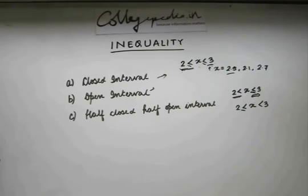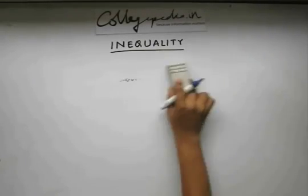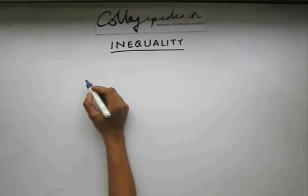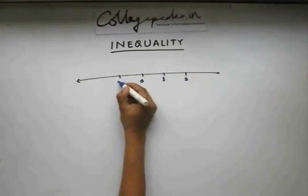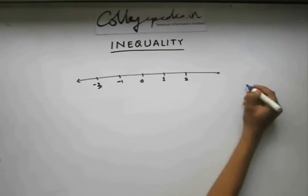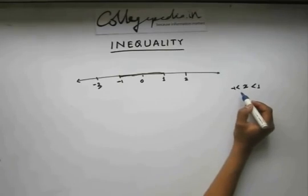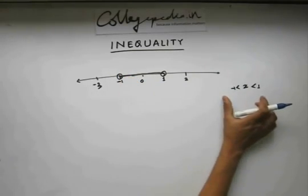To solve questions on inequality, we need to have knowledge of the number line, because generally all inequality questions are solved using the number line. A number line is basically a line where we can represent all the real numbers. When I say that x lies between minus 1 and 1, on the number line we darken that portion, and since it doesn't include minus 1 and 1, we round up those points. This is how we represent the range in which x lies on a number line.